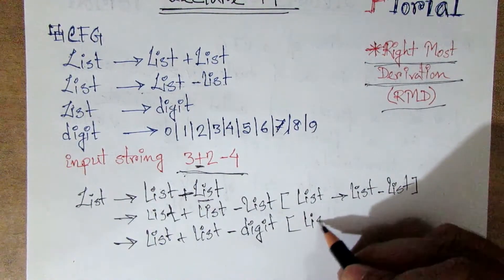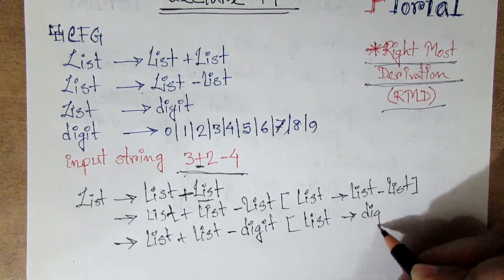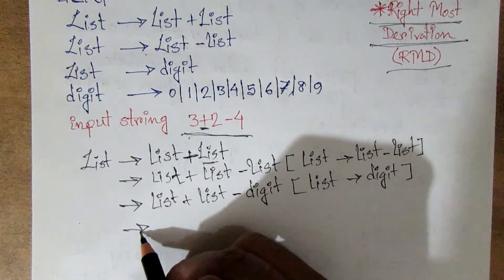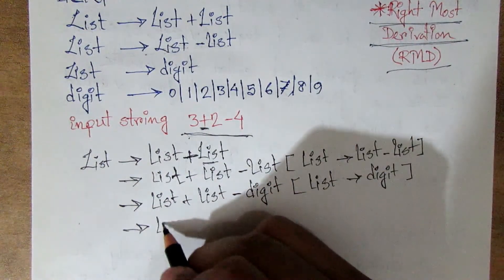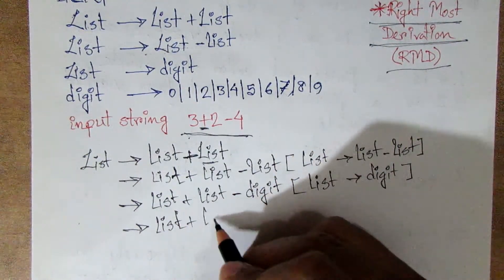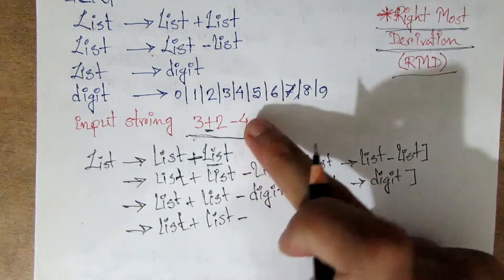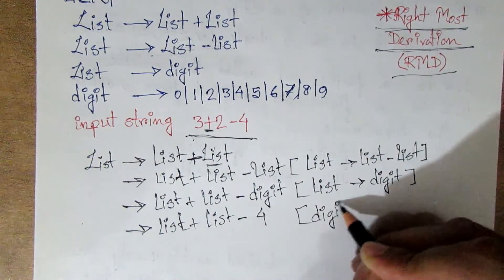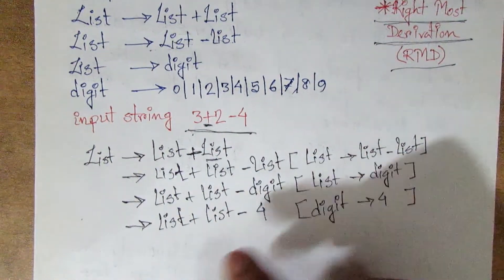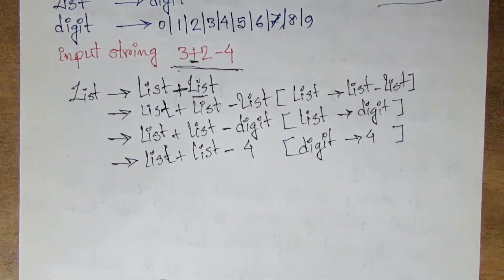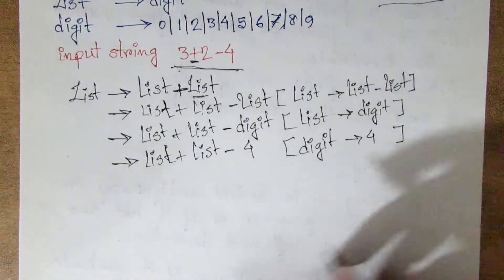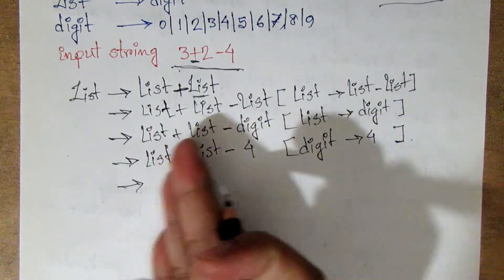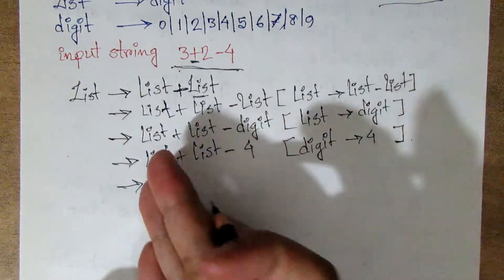So here list implies digit. Then this digit. We have now done the leftmost derivation and the rightmost derivation. This is a simple example.